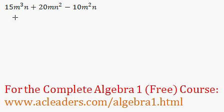Okay, so we would like to factor this trinomial completely. The greatest common factor between 15, 20, and negative 10 would be, of course, 5.